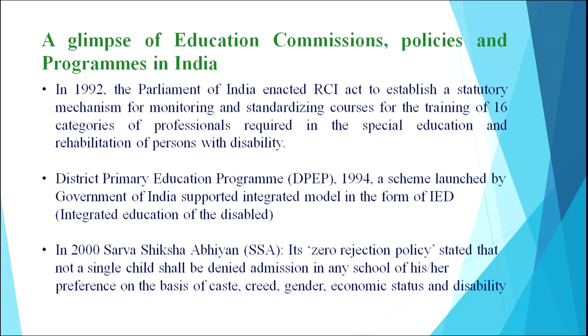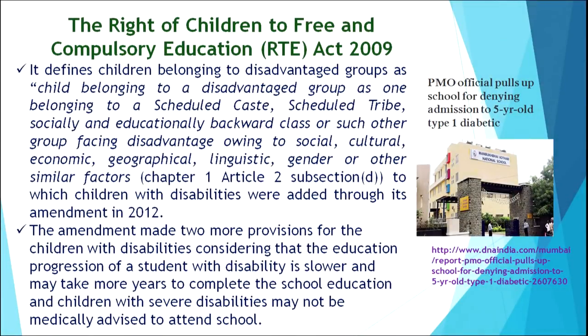Finally, in 2000, Sarva Shiksha Abhiyan (SSA) brought its Zero Rejection Policy, which stated that not a single child shall be denied admission in any school of his or her preference on the basis of caste, creed, gender, economic status, or disability. This was a big change, which was followed by the Right of Children to Free and Compulsory Education, that is the RTE Act 2009.